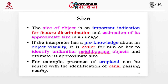The next element is size. The size of an object is an important indication for feature discrimination and estimation of its approximate size in an image. If the interpreter has pre-knowledge about an object visually, it is easier to identify unfamiliar neighboring objects and estimate their approximate size. For example, the presence of cropland and its size can be determined with the identification of a canal passing nearby.